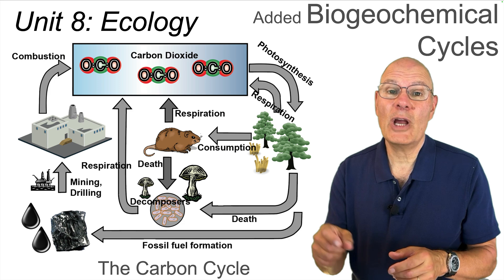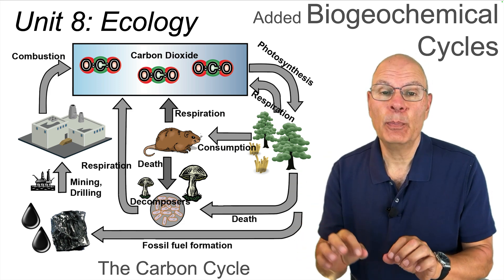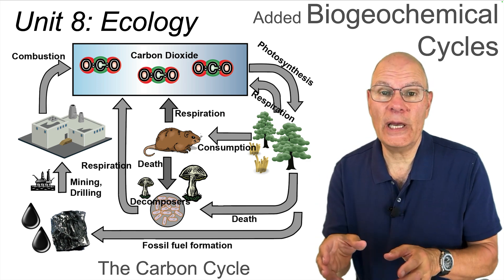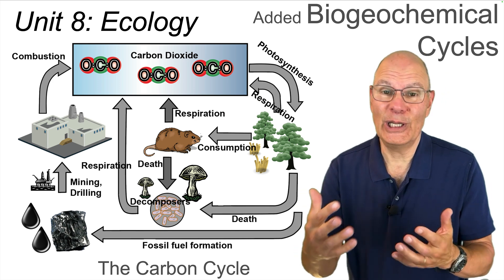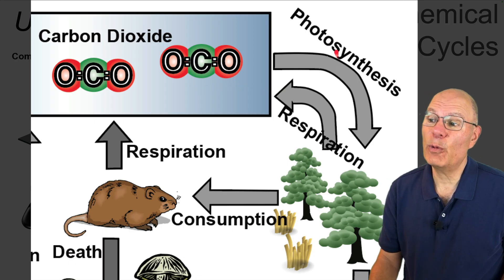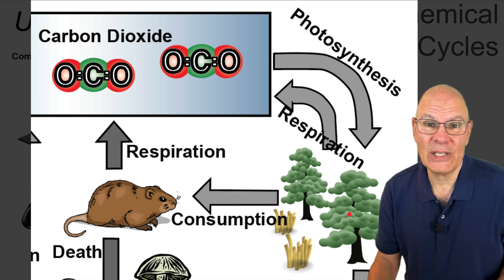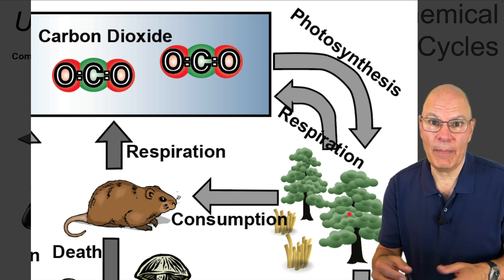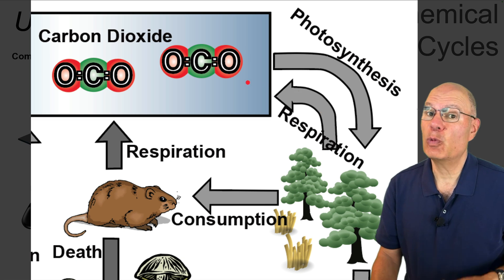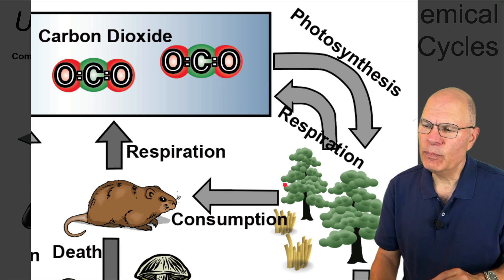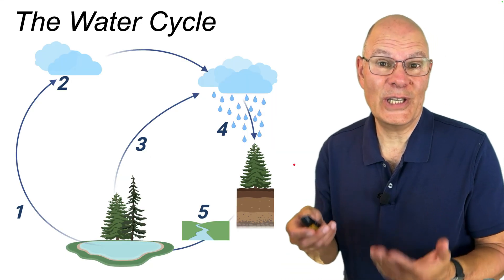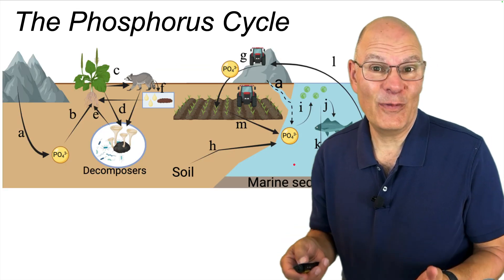The biggest changes in AP Bio come at the end of the course in Unit 8 Ecology, where the College Board added a new topic: biogeochemical cycles. Biogeochemical cycles are pathways through which substances and living things — including you and me — move between the living and the non-living world. For example, in the carbon cycle, carbon dioxide in the atmosphere gets pulled into plants through photosynthesis. The plants incorporate that carbon dioxide into organic compounds like sugars, and then they might use those very same organic compounds in cellular respiration, which returns the carbon to the atmosphere as carbon dioxide. Other biogeochemical cycles you'll need to learn about include the water cycle, the nitrogen cycle, and the phosphorus cycle.